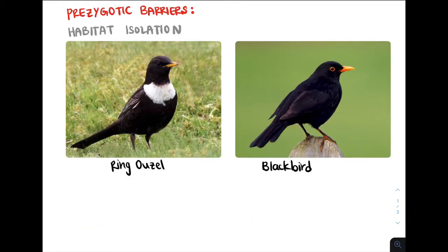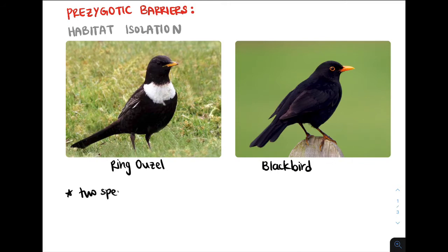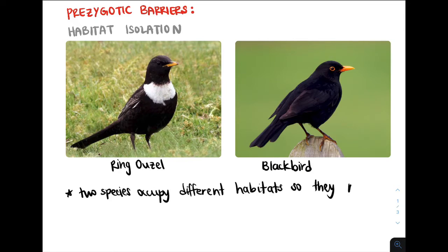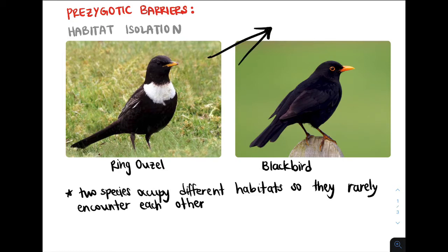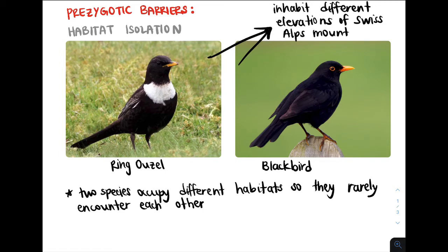Let's start with an example of habitat isolation, looking at the ring ouzel and the blackbird. Habitat isolation is when two species occupy different habitats so that they rarely encounter each other, and because of this, they don't mate or fertilize to produce offspring. Specifically, the ring ouzel and blackbird inhabit different elevations of the Swiss Alps in Switzerland and Europe, so even though they live within the same area, they barely encounter each other and won't mate.